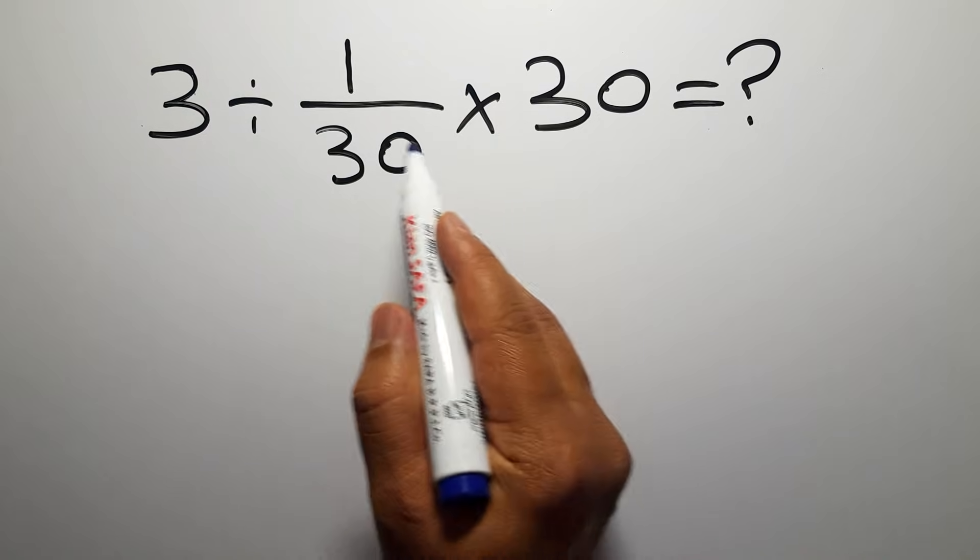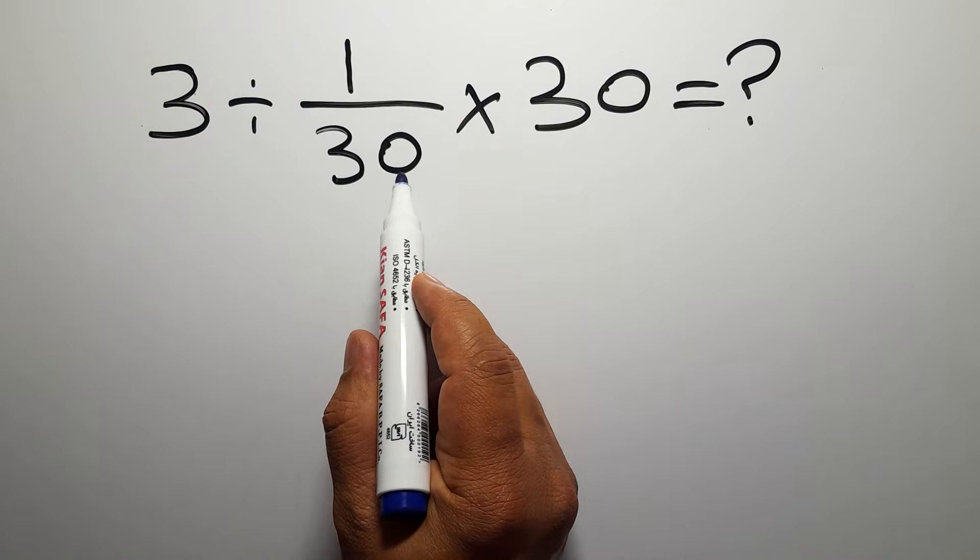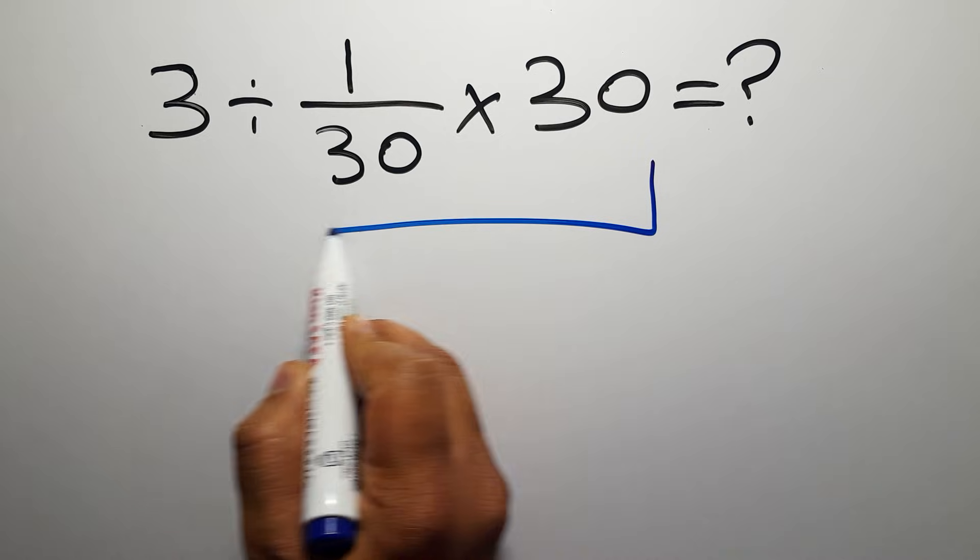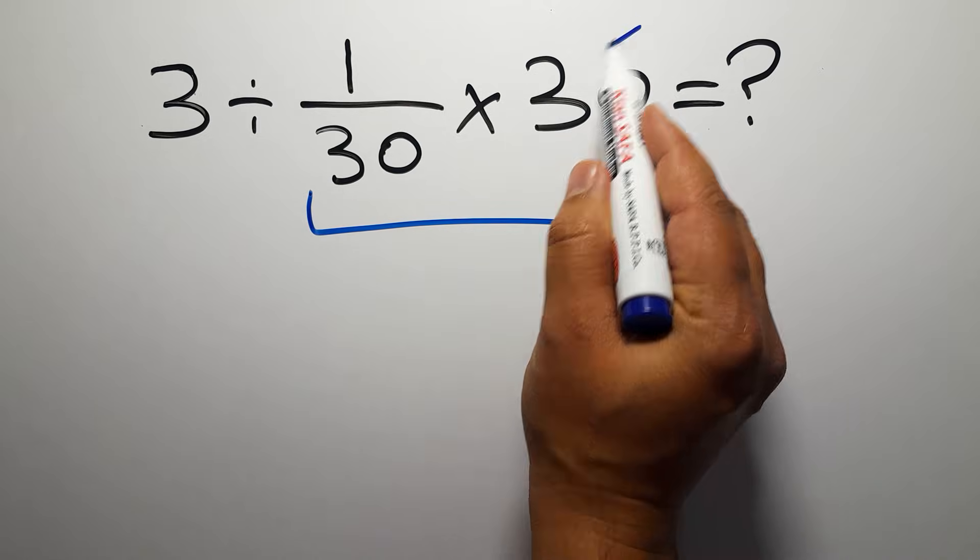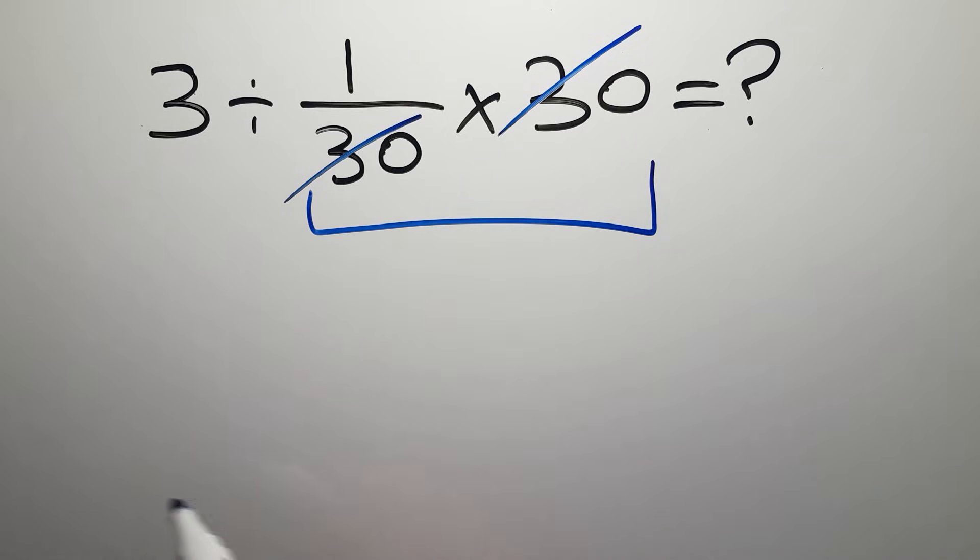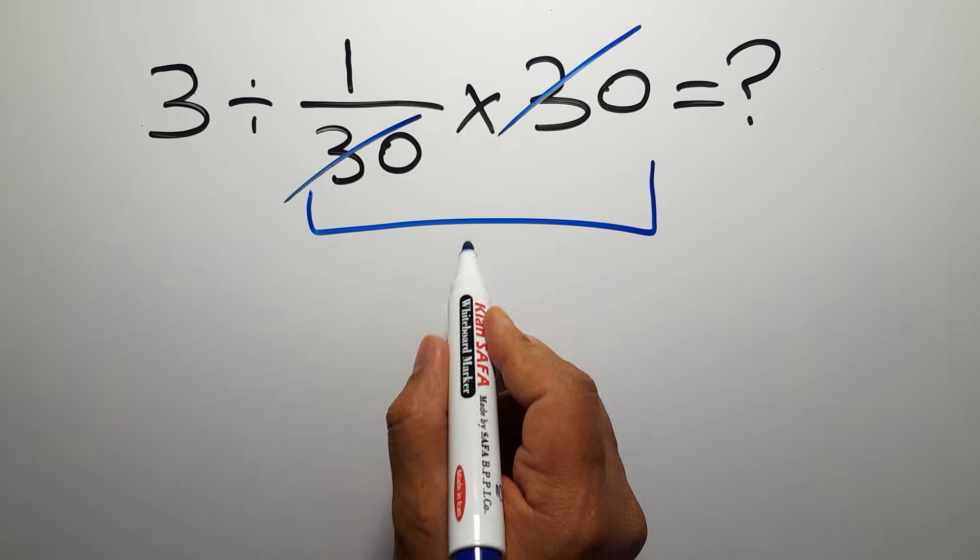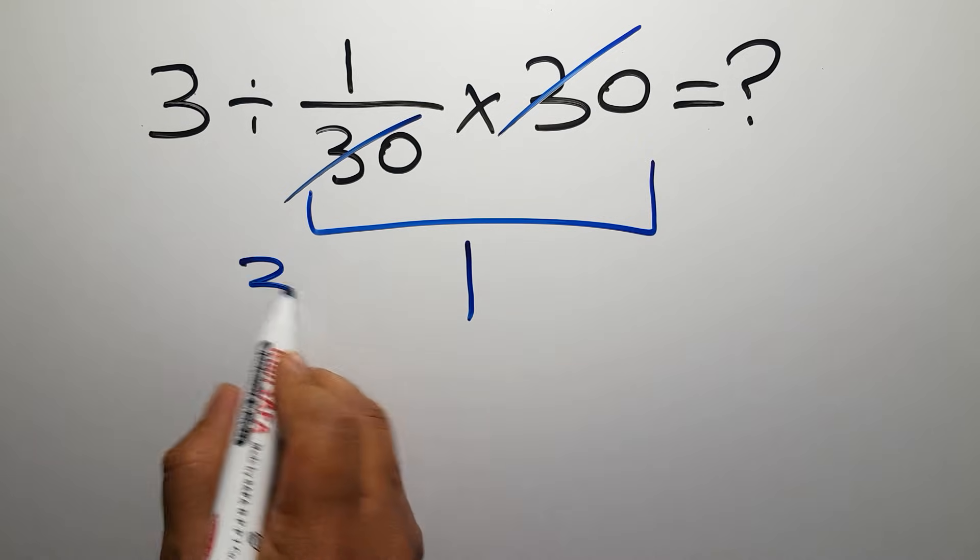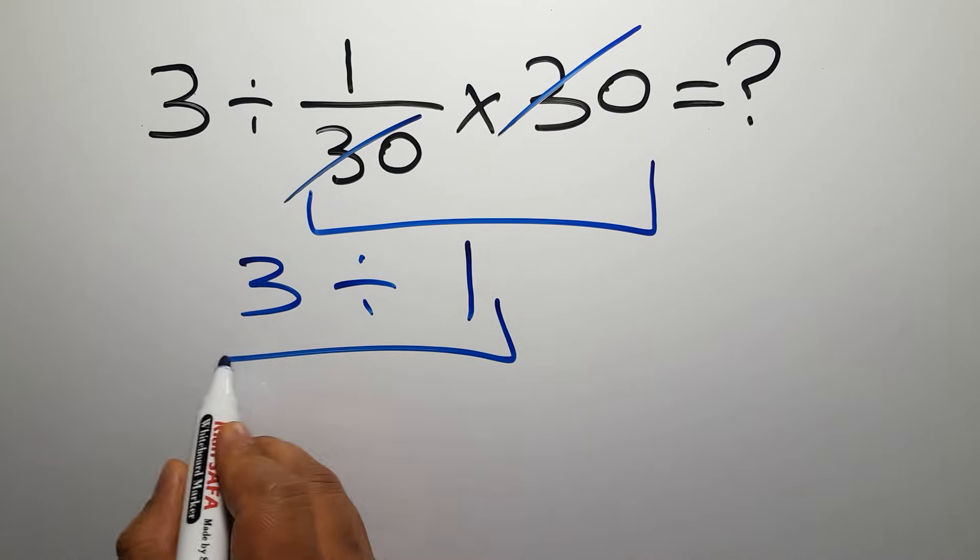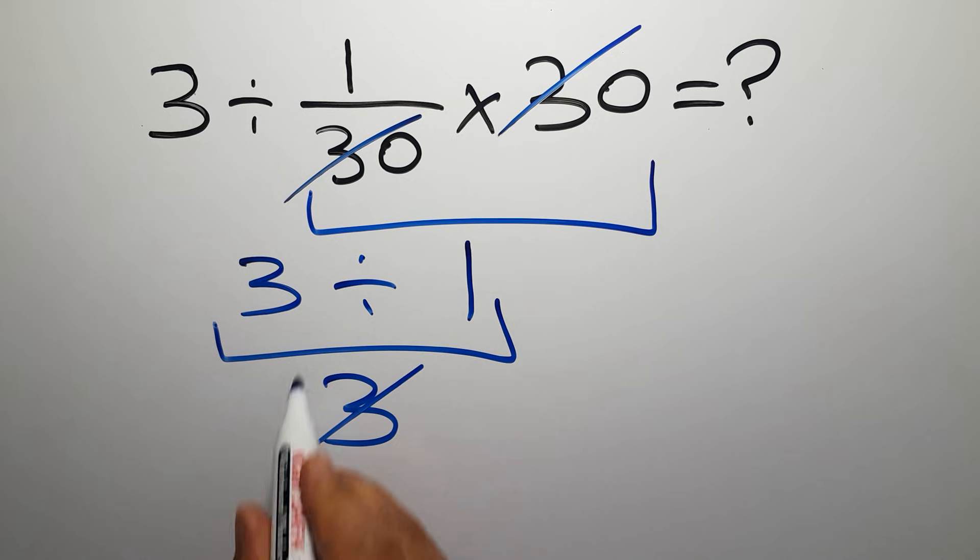First, we do this multiplication: 1 over 30 times 30. We can easily cancel this 30 and this 30, so here we have just 1, and 3 divided by 1, which equals 3. But this answer is not correct.